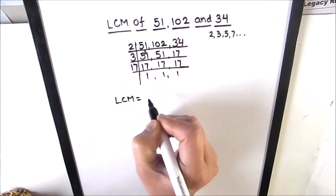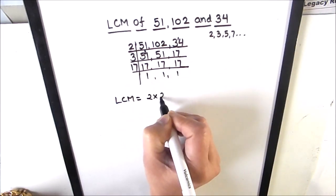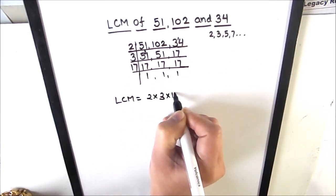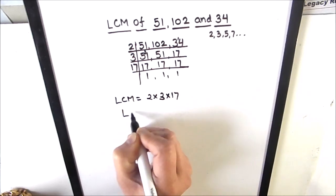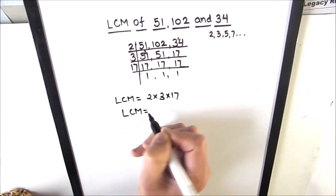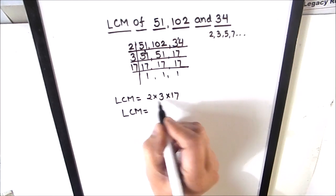So the LCM of the three numbers will be the product of all the factors which are on the left hand side. So 2 times 3 times 17 is the LCM of 51, 102, and 34.